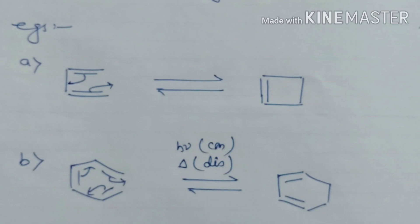In the second example, a compound with three double bonds gets converted into a cyclic product with two double bonds, because one pi bond has been converted to a sigma bond forming the ring. The reaction can occur under heat or light conditions, involving conrotatory or disrotatory rotation — which we will study in the next lecture, to be uploaded very soon.